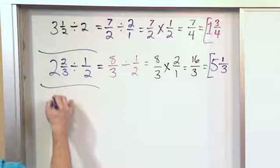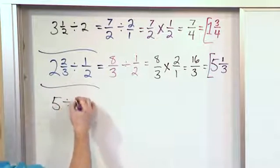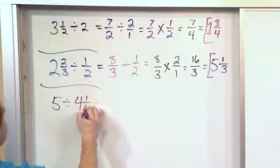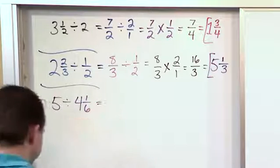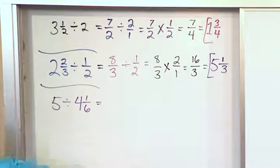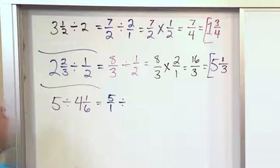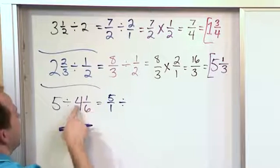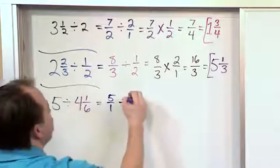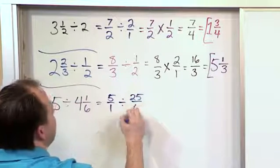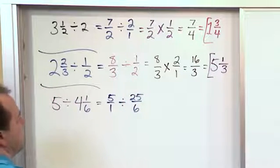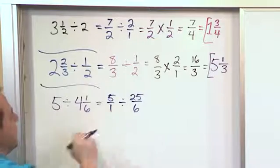Now what if we have the whole number 5 divided by a mixed number which is 4 and 1 sixth. Well the first thing we want to do is this 5 we want to write it as 5 over 1. The division sign let's just keep it there for now. The mixed number we want to write as an improper fraction. So 6 times 4 is 24 plus 1 is 25 and then we have over 6 like this. So we've just converted this to an improper fraction.